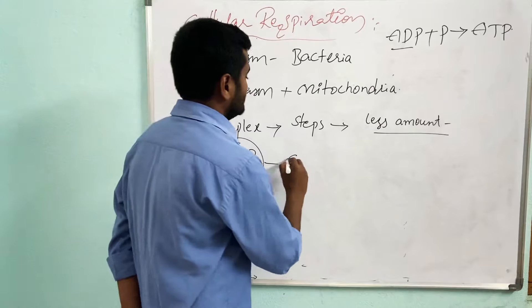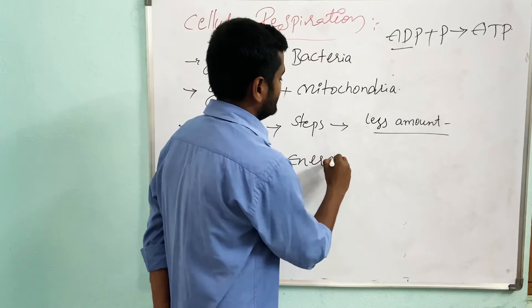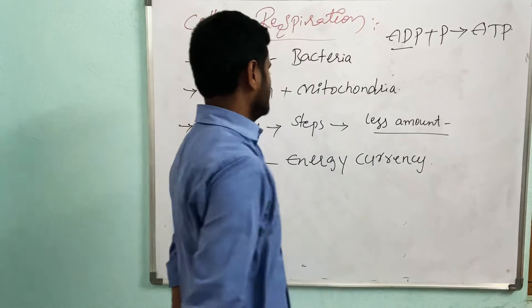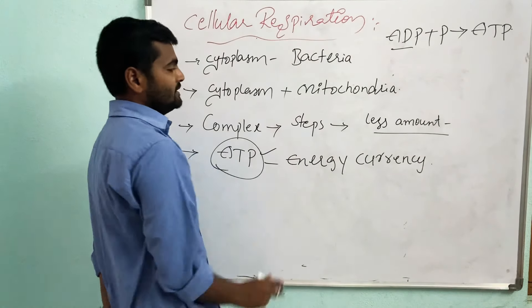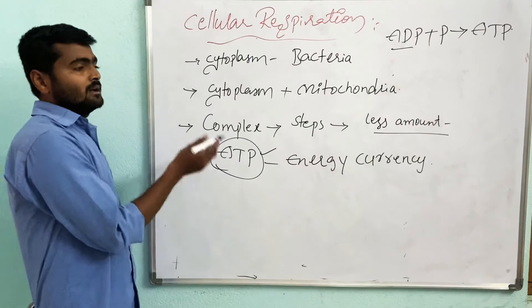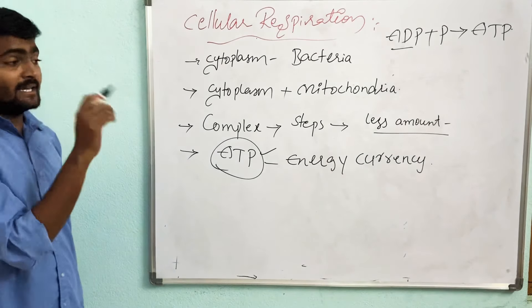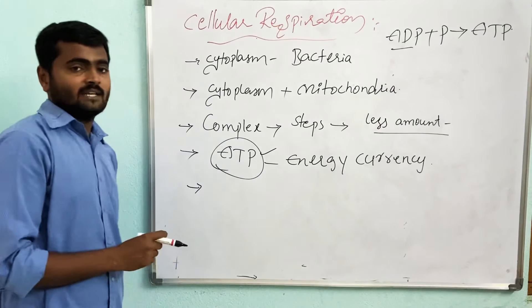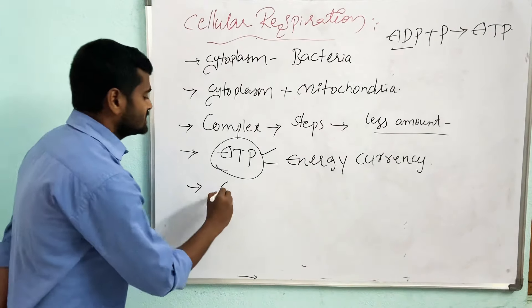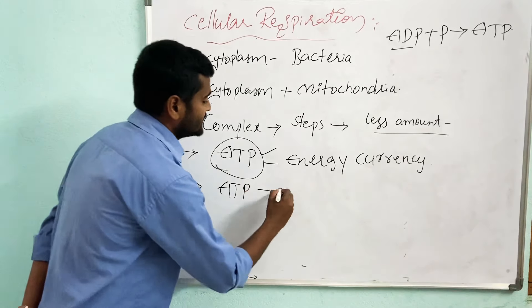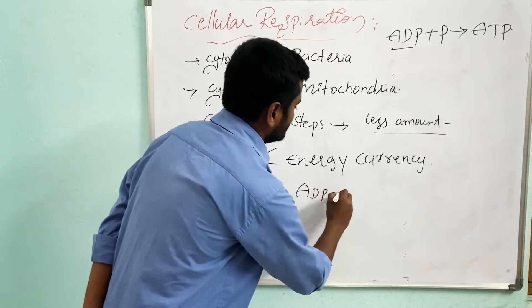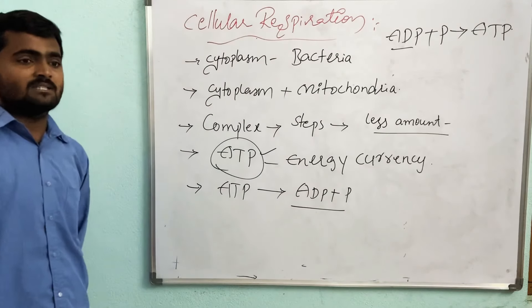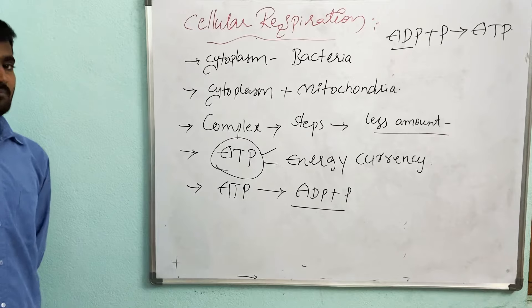ATP is formed by bonding a third phosphate to ADP. ATP is also called the energy currency. Whenever the released energy is stored in ATP for further use, it can be stored and used whenever the cells require energy. The ATP can break down, releasing the last phosphate bond and giving energy to perform cellular activities.